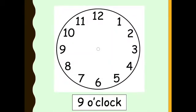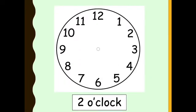The next one is 9 o'clock. Have a think — where does the big hand go and where does the small hand go? Well done if you said the small hand goes on 9 and the big hand goes on 12. That is 9 o'clock. The next one is 2 o'clock. The small hand goes on number 2 and the big hand goes on number 12. That is 2 o'clock.